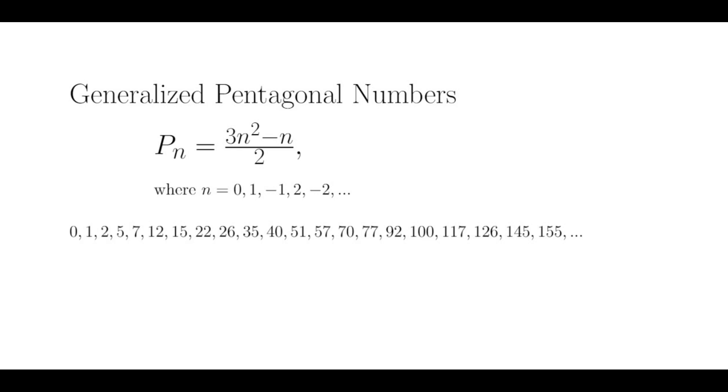However, if instead we plugged in n equals 0, 1, negative 1, 2, negative 2, and we continued that pattern, then we'll get the generalized pentagonal numbers.